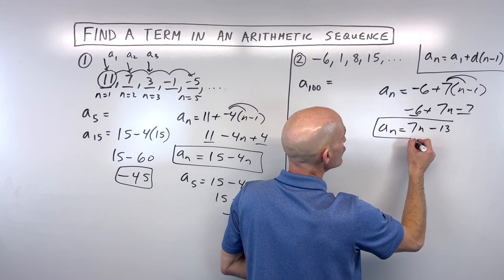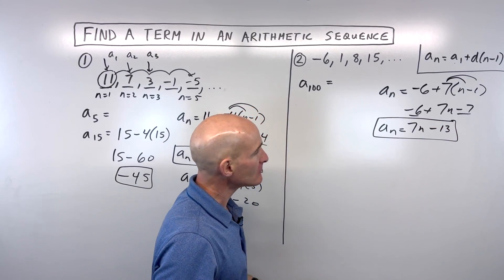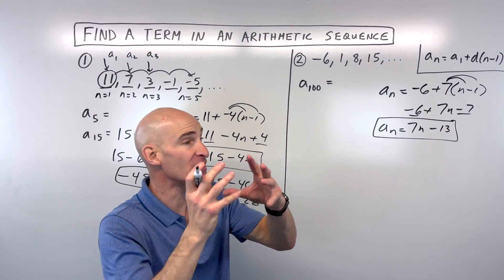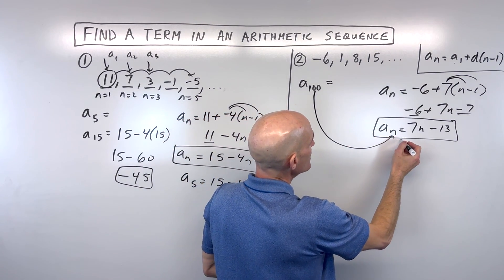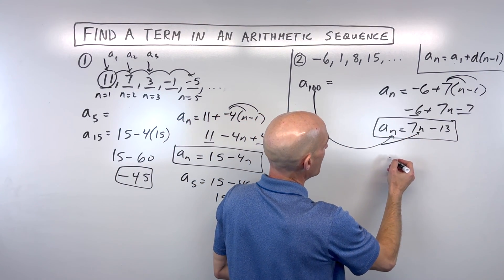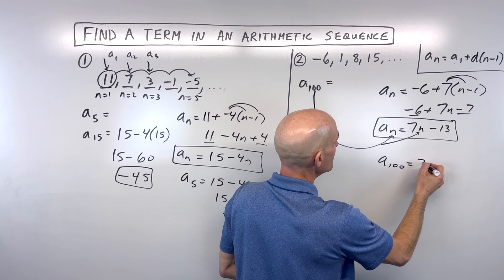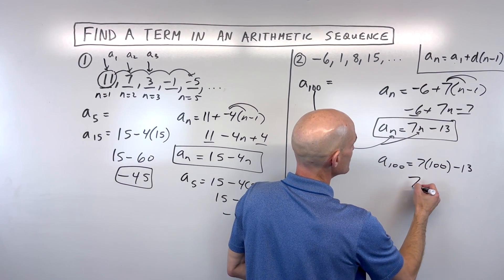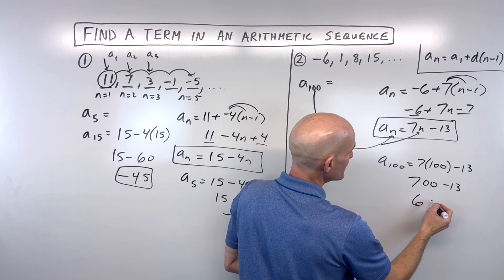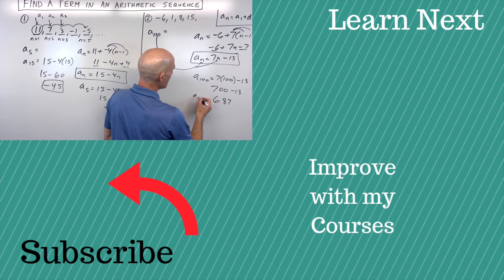And this is a formula or a rule or an explicit formula that will take us right to whatever the nth term is. In this case, we want to find the 100th term, so we're just going to put 100 in for n. So a sub 100 equals 7 times 100 minus 13. So 700 minus 13 is 687.